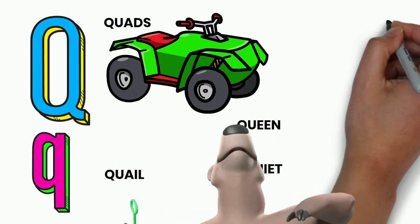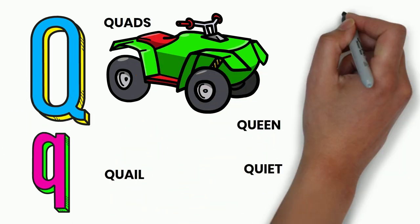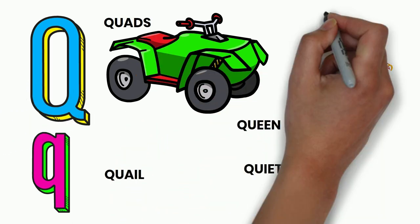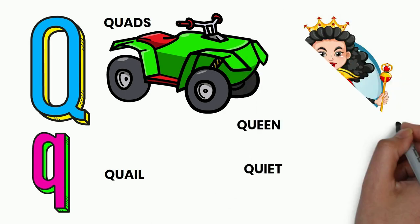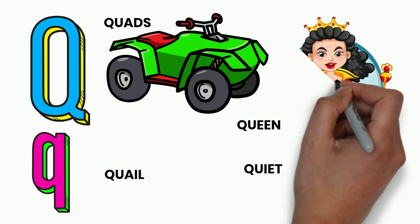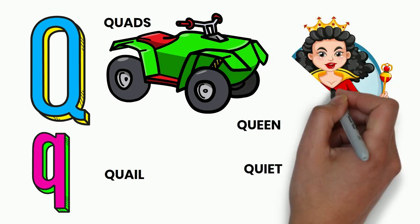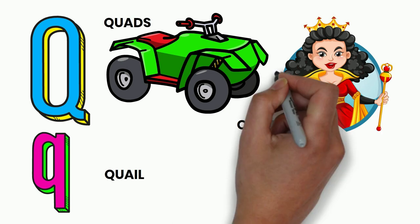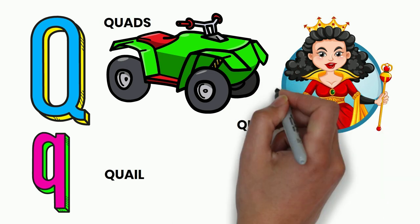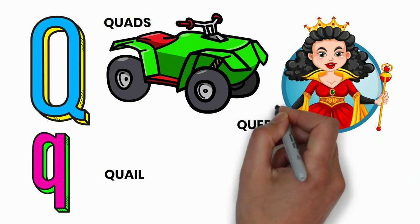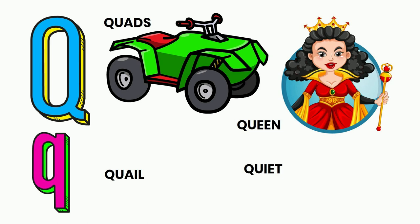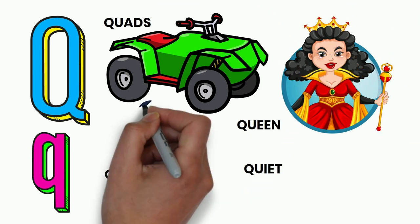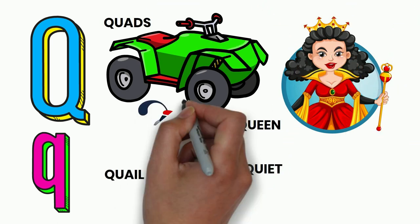Let's draw a quads. I'm a Q. F, G, H, I, J, K, L, M, N, O, P. Q, R, S, T, U, V. W, X, Y, and Z. Now I know my ABCs. Next time won't you sing with me.